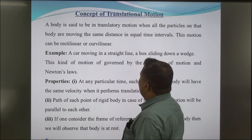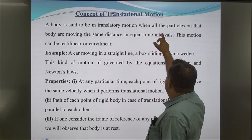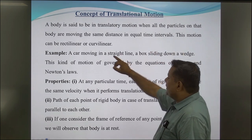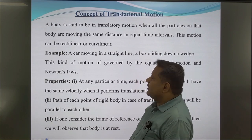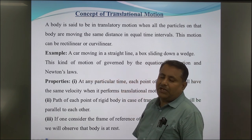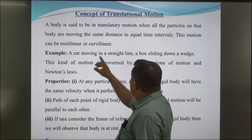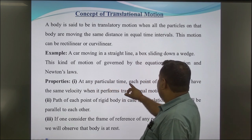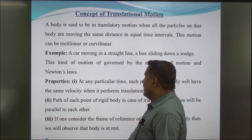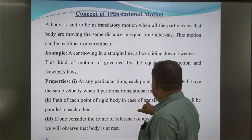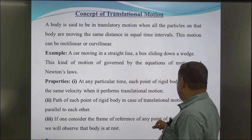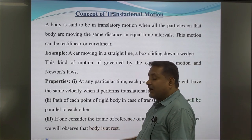Concept of translational motion. A body is said to be in translatory motion when all the particles on that body are moving the same distances in equal time intervals. This motion can be rectilinear or curvilinear. For example, a car moving in a straight line or a box sliding down a wedge. This kind of motion is governed by the equations of motion and Newton's laws of motion. Properties: first, at any particular time, each point of a rigid body will have the same velocity when it performs translational motion; second, the path of each point of a rigid body in translational motion will be parallel to each other; third, in the frame of reference of any point of the rigid body, the body is at rest.